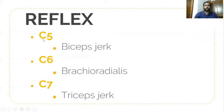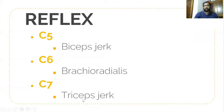The reflexes for the cervical spine: C5 and C6 — biceps jerk and brachioradialis (checked via wrist extensors); C7 — triceps jerk. These are the reflexes for the cervical spine.